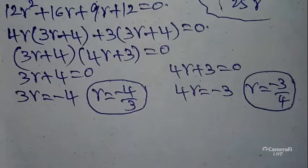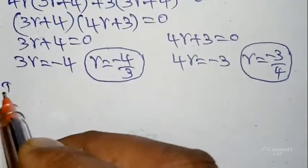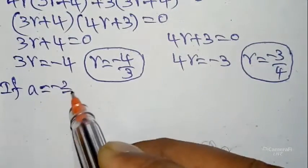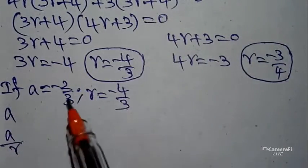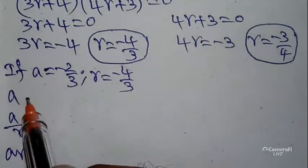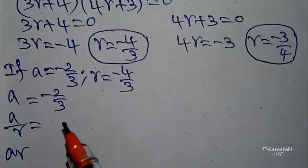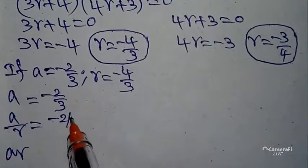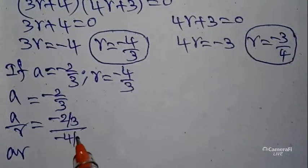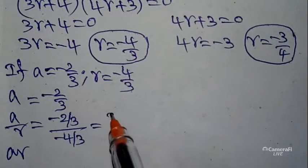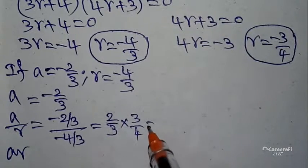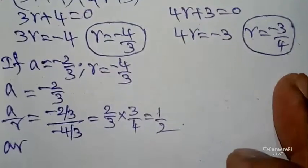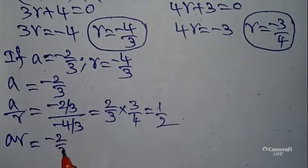Taking Case 1: a = −2/3 and r = −4/3. The roots are a/r, a, and ar. The middle root a = −2/3. For a/r: (−2/3) ÷ (−4/3) = (2/3) × (3/4) = 1/2. For ar: (−2/3) × (−4/3) = 8/9.